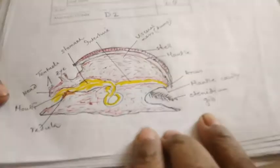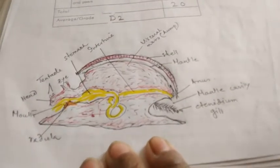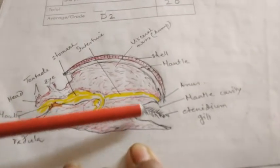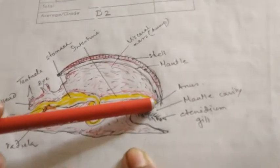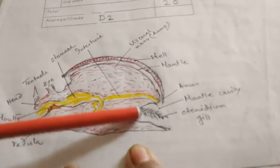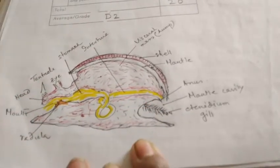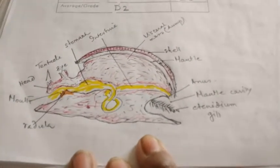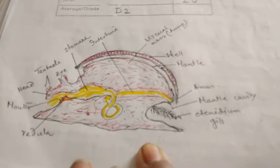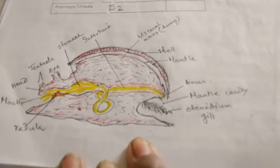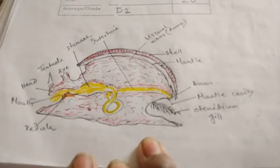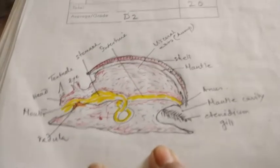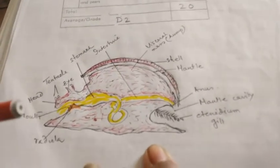Respiration is by gills which are present in the mantle cavity. This is the mantle and this is the mantle cavity. Respiration by gills when they are aquatic. They respire through gills which are present in the mantle cavity and it is also called ctenidia. But they also have the pulmonary sac or air sac, lungs by which they respire in the terrestrial condition.